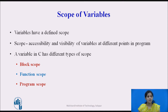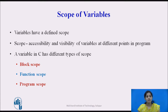First we see the scope of variables in C. All the constants and variables have a defined scope. Scope means the accessibility and visibility of the variables at different points in a program. A variable in C has different types of scope: block scope, function scope, and program scope.